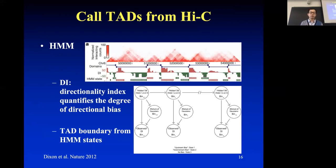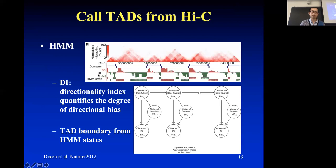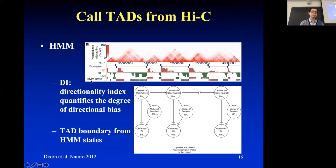In this model, we define three different states: upstream bias, downstream bias, and the boundary state. The index sometimes is positive, then becomes negative — alternating. We map those index values back to the three states, and in the hidden states of the hidden Markov model, it's either state one or state two. Using these states, we can define the boundary of each domain from the heat map.